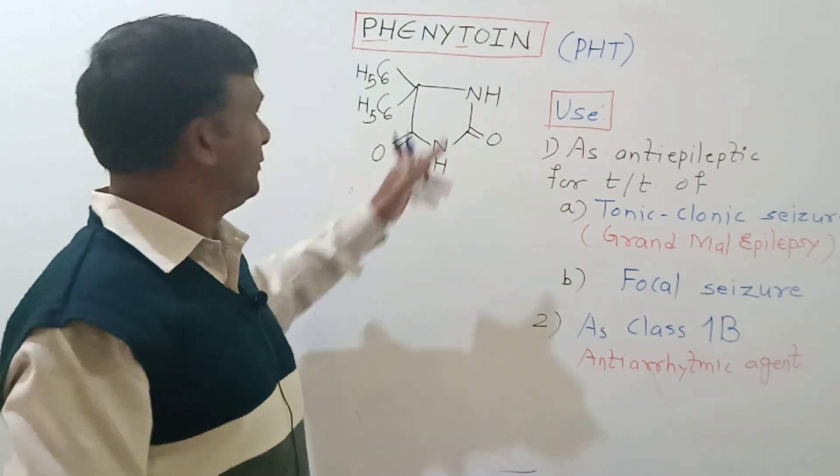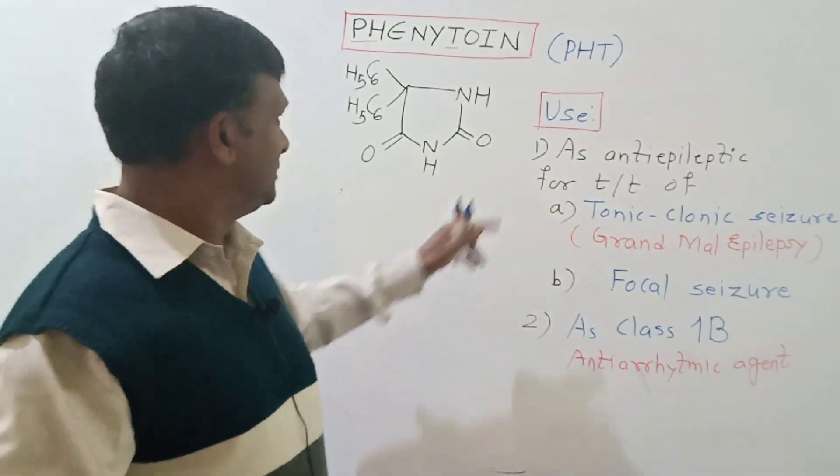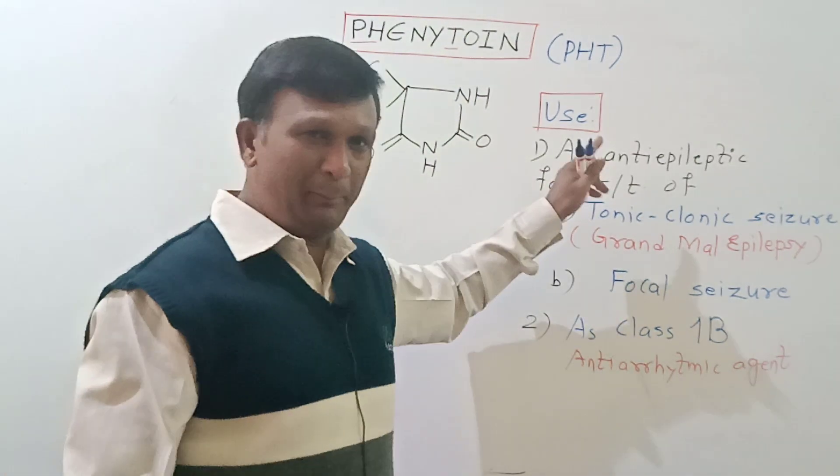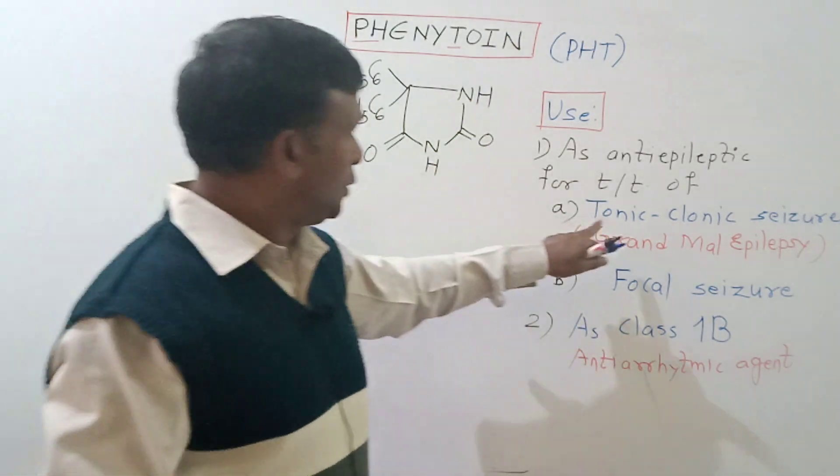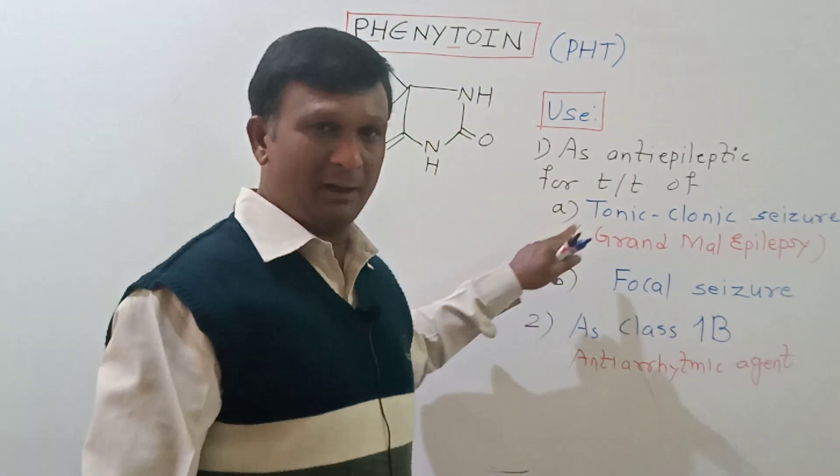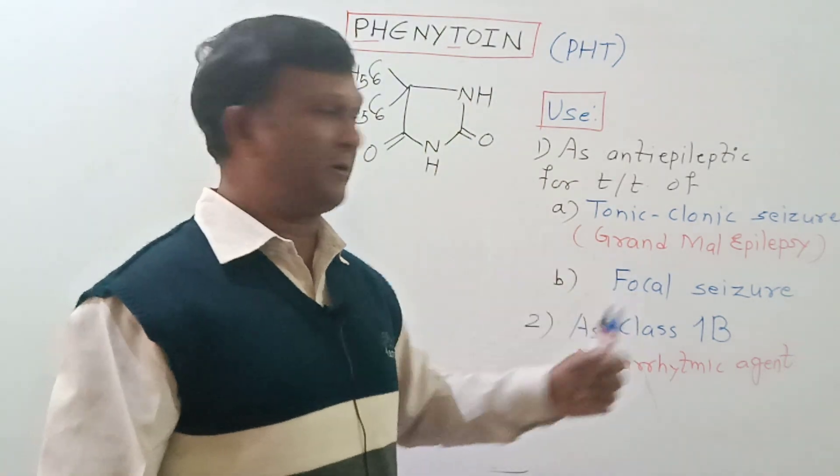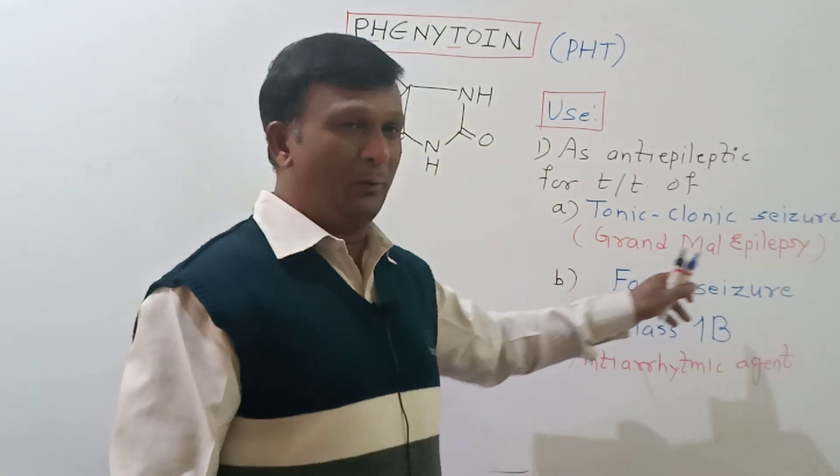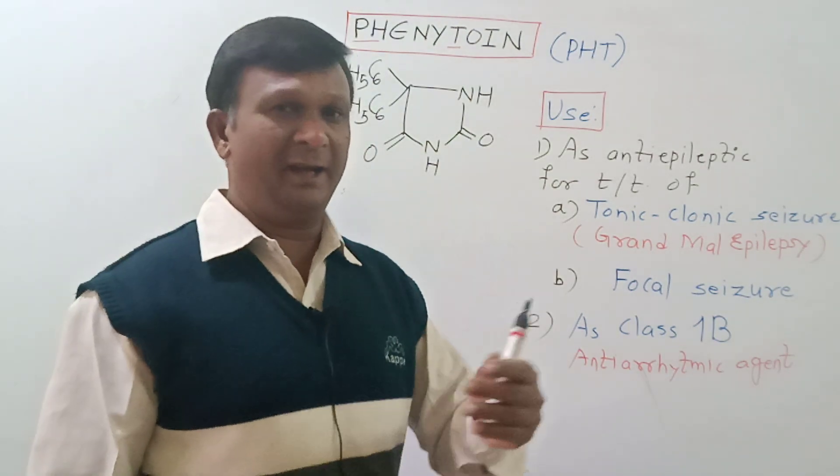One important point is that this compound is used as an antiepileptic drug in the treatment of tonic-clonic seizure, which is also called grand mal epilepsy, where there is contraction of the muscles. Secondly, it is used in the treatment of focal seizure, in which the affected area is the hemisphere of the brain, that is half part of the human brain.